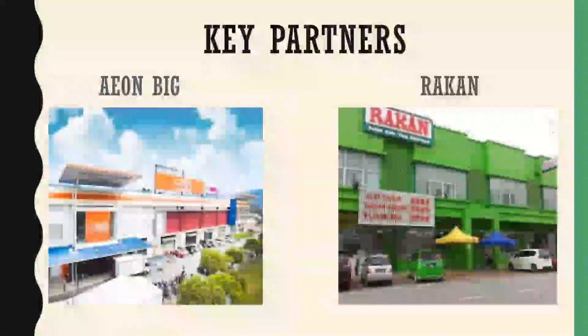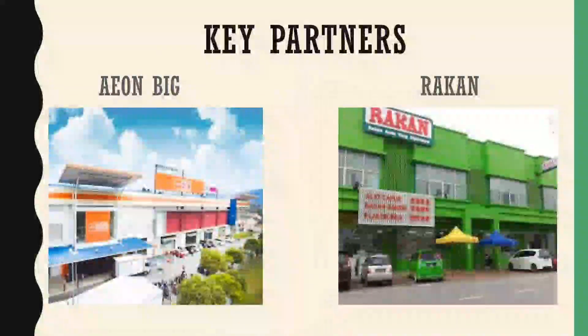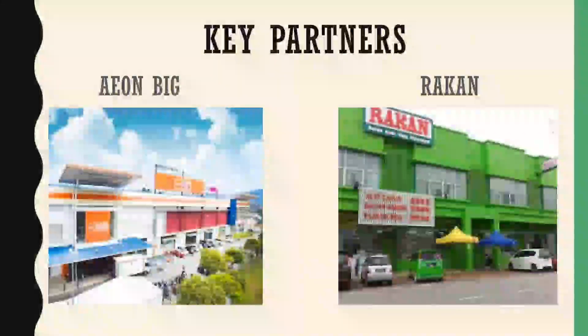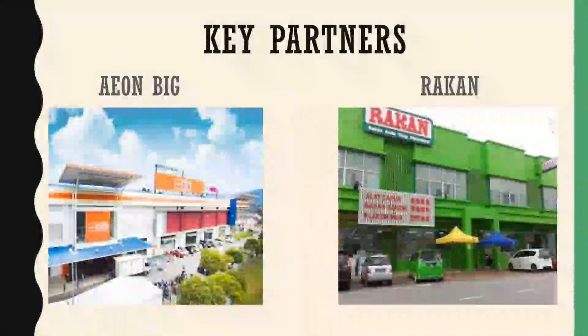The key partners are Aion Big and Rakan. From Aion Big, we buy the ingredients for the nasi daging itself, and from Rakan we get packaging, fork and spoon, and so on.